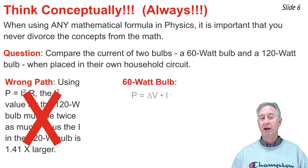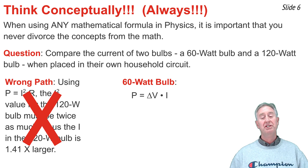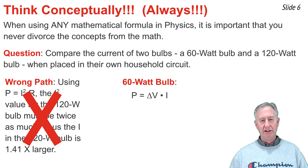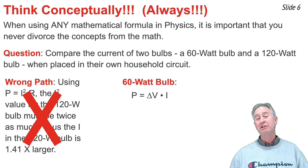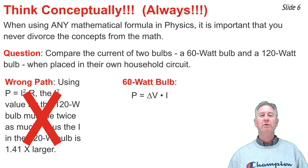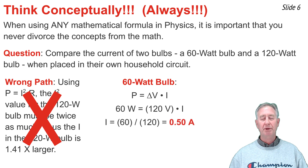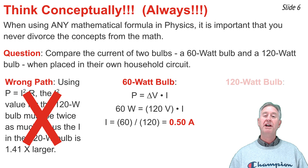A better way to approach this problem is to use P equal delta V times I, because both the 60-watt and the 120-watt bulbs are plugged into the same outlet, so delta V is the same for each. If the outlet is a U.S. outlet, that delta V value is around 120 volts. I'm going to put 60 watts in for P and 120 volts in for delta V and solve for I — it comes out to be 0.5 amps for the 60-watt bulb.